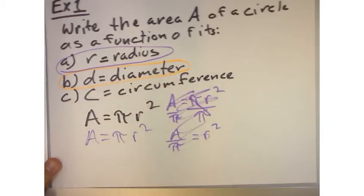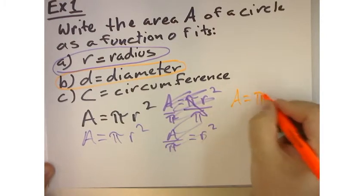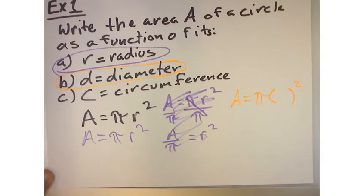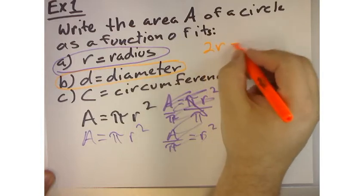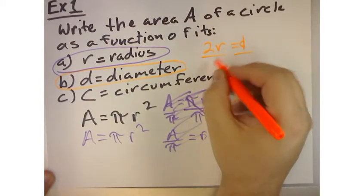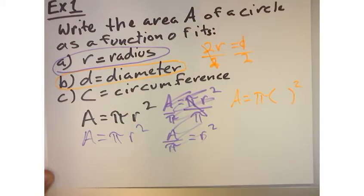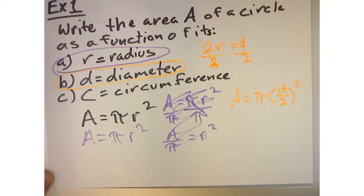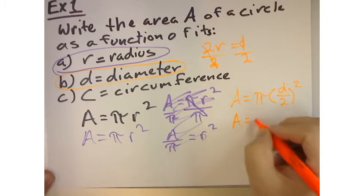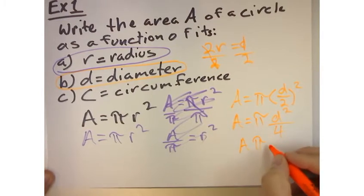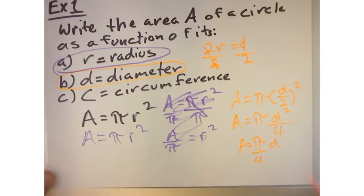Now, to do that in terms of the diameter, there's a relationship between the radius and the diameter. So normally I would put the radius squared, right? Well, the relationship is two times the radius is equal to the diameter. So if I solve for the radius, I get the diameter over two. So now, if I square that, I get the diameter squared over four. And I suppose I could write it like this. I could say the area equals pi over four times the diameter squared.